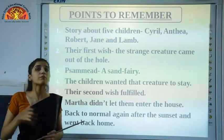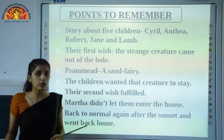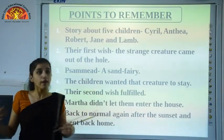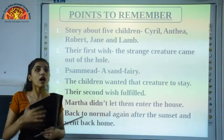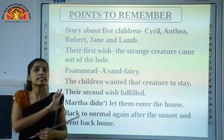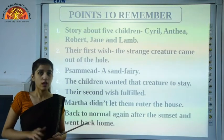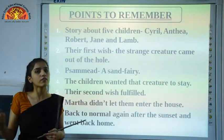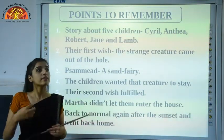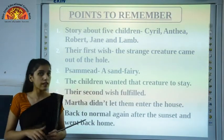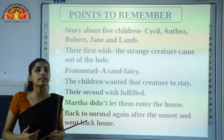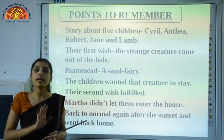After their second wish was fulfilled, what happened? They were looking very strange because they had wanted to become very beautiful. They were unrecognizable — nobody could recognize each other. If they were not wearing the same clothes, they were not able to recognize each other. When they went home, their cook Martha didn't let them enter because she could not recognize them. She scolded them and shut the door on their faces.